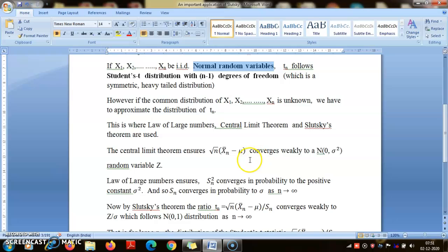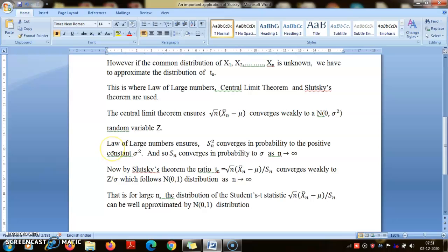So by Central Limit Theorem, this will converge weakly to a random variable Z which follows normal distribution with mean 0 and variance σ².